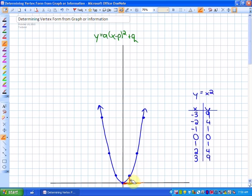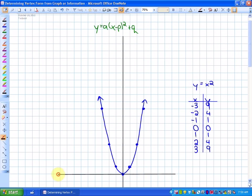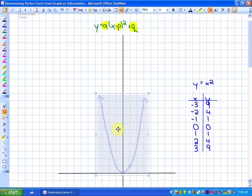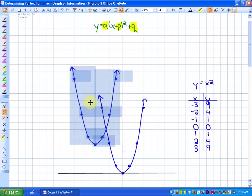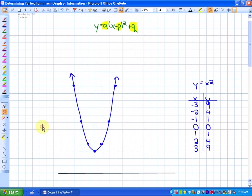What we're going to see happening today is as we move this graph or this function, what's going to change are the values of a, p, and q. For example, if I decided to take this function and move it, move the vertex to here, the coordinate may be negative 4 and 3, so that function now would be y is equal to x plus 4 squared, because the vertex has moved 4 units to the left, and plus 3.